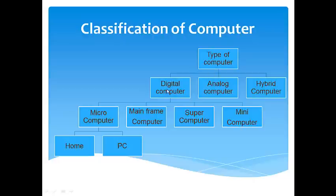A digital computer is a computer which works on digital input. An analog computer is a computer which works on physical quantities — for example, temperature, pressure, and so on. A hybrid computer is the combination of a digital computer plus an analog computer. Further, the digital computer can be classified as micro computer, mainframe computer, super computer, and mini computer.